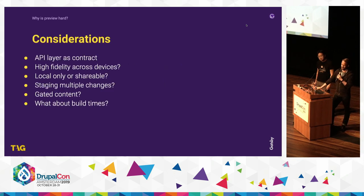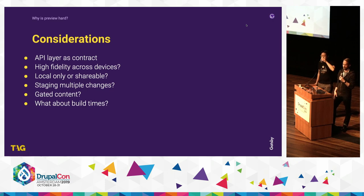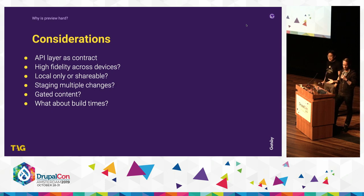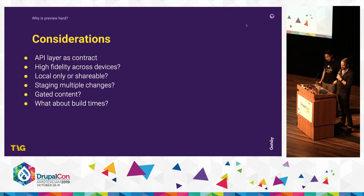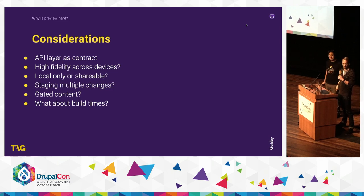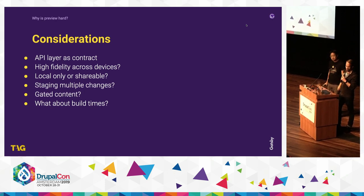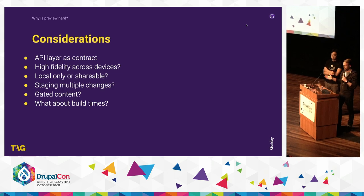Here are some of the considerations you have to encounter. First and foremost, what kind of API layer are you going to use? This is decreasingly a problem in the Drupal world — it used to be custom REST APIs and views. Now we have JSON API in core, which is the contract between front end and back end. You also have to consider that preview is only useful if it's high fidelity, giving marketers high confidence that it reflects what the site will actually look like when deployed live. You have to consider whether they want to preview locally or generate a shareable link.